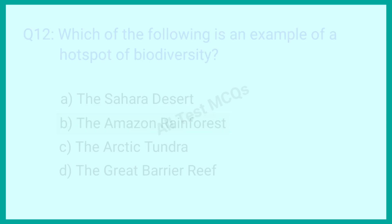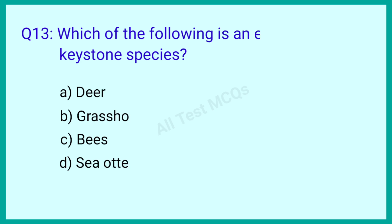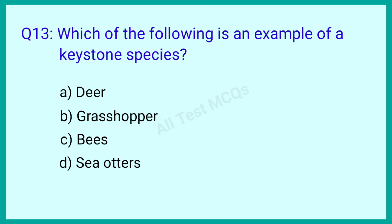Question number 13: Which of the following is an example of a keystone species? The correct answer is option D: Sea otters.